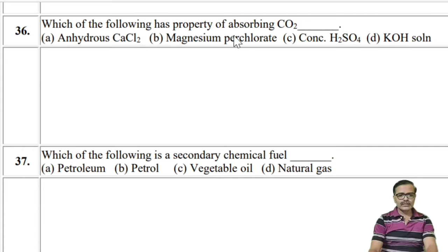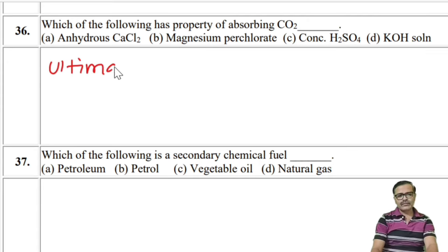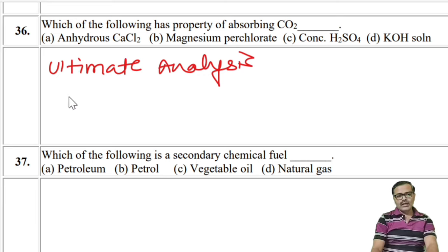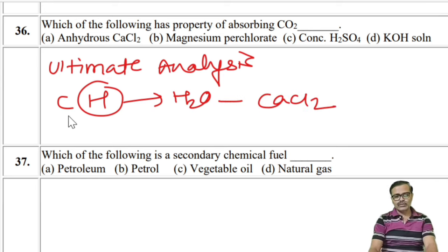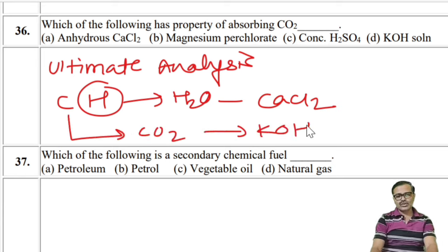Which of the following has the property of absorbing CO2 in ultimate analysis? Hydrogen is converted to H2O, absorbed by calcium chloride in the first U-tube. Carbon is converted to CO2, absorbed by KOH solution in the second U-tube. So KOH solution absorbs CO2 — the answer is KOH solution.